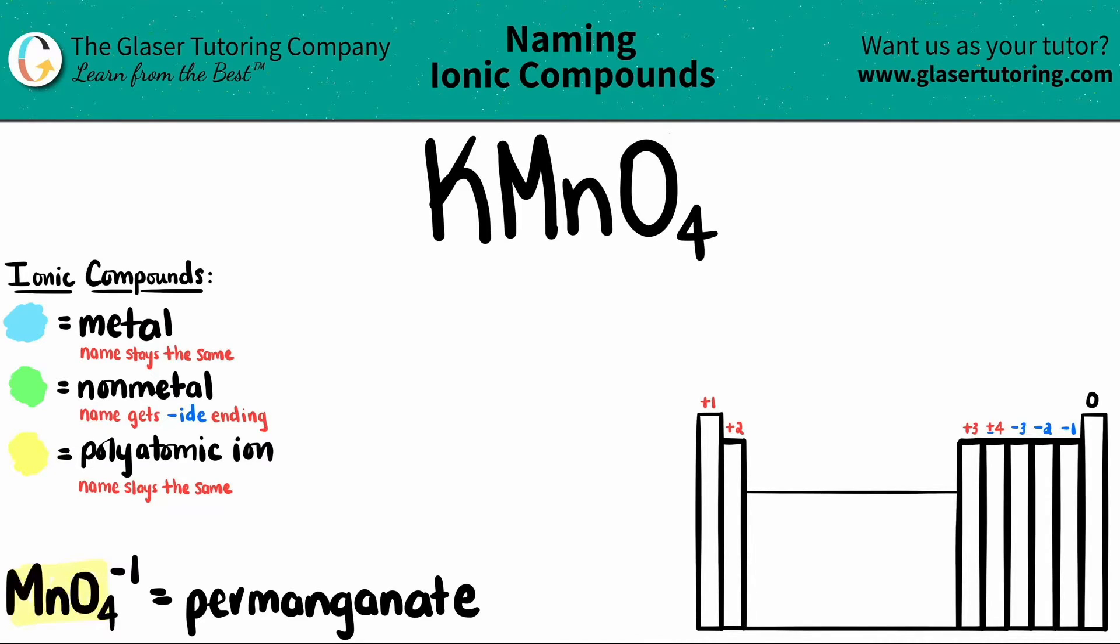MnO4, every time that you see this ion, always has a negative one charge. So memorize that. The name is permanganate. So it's the permanganate ion. And the MnO4 is right here. So we got that part covered.